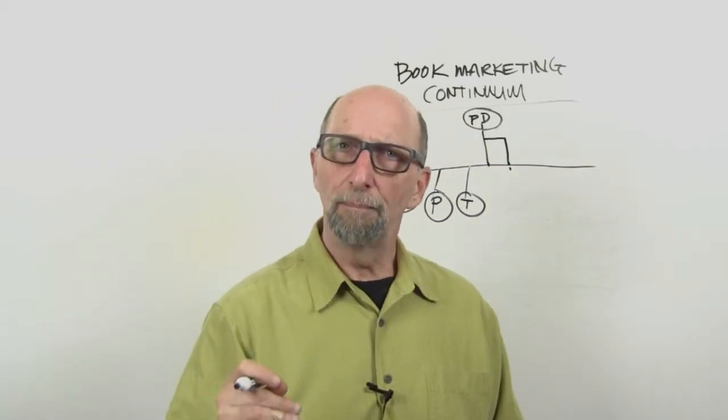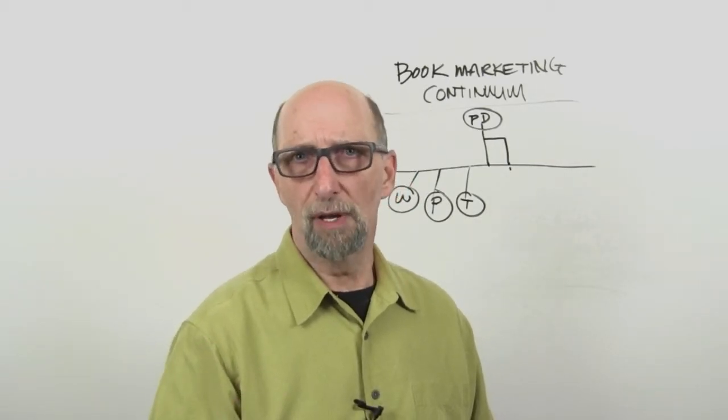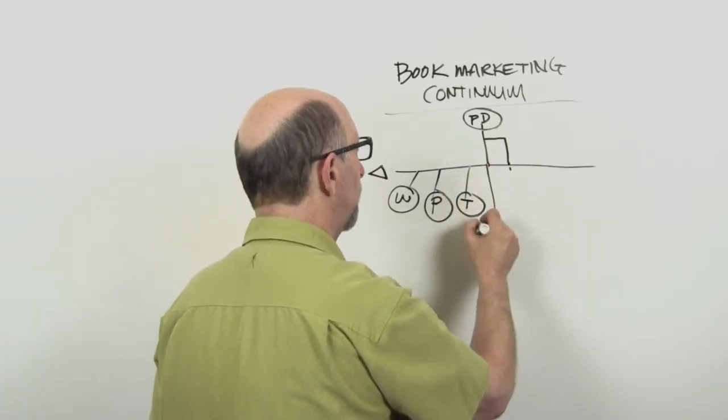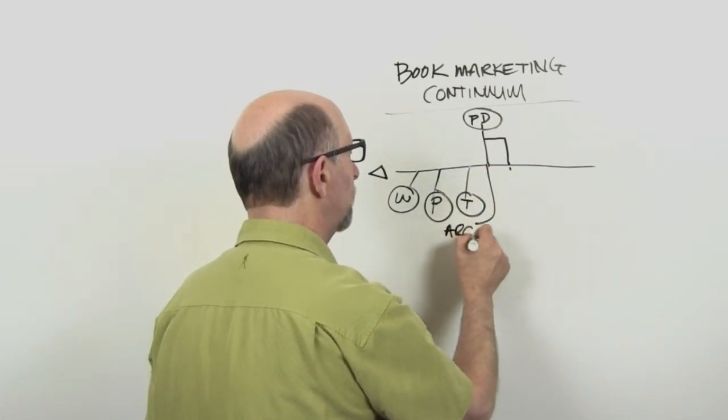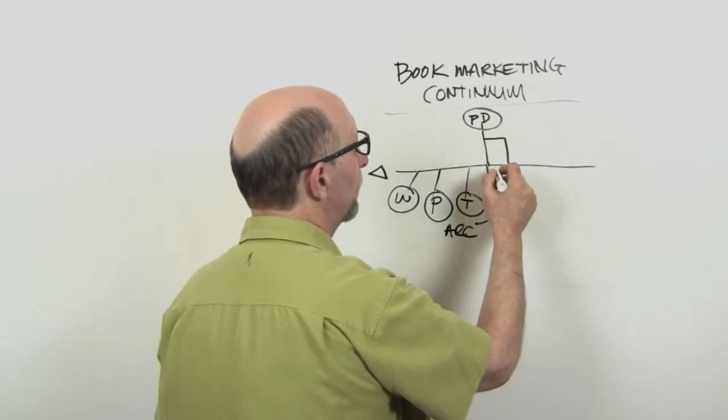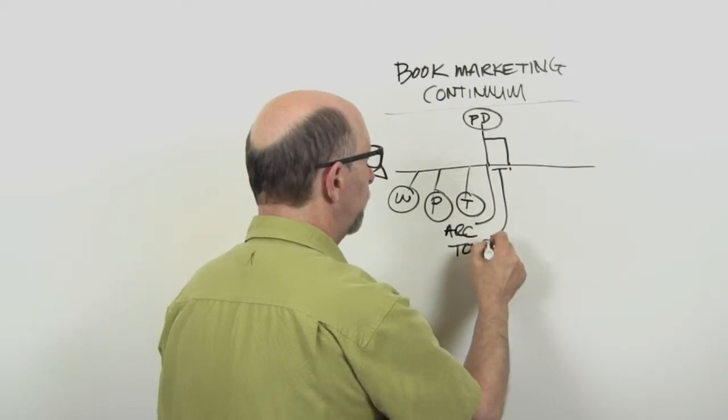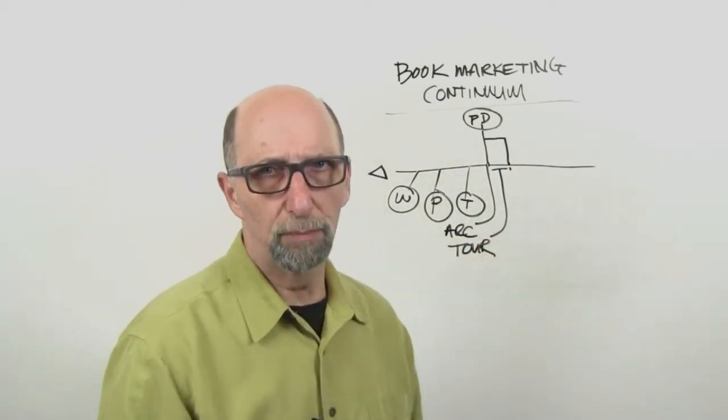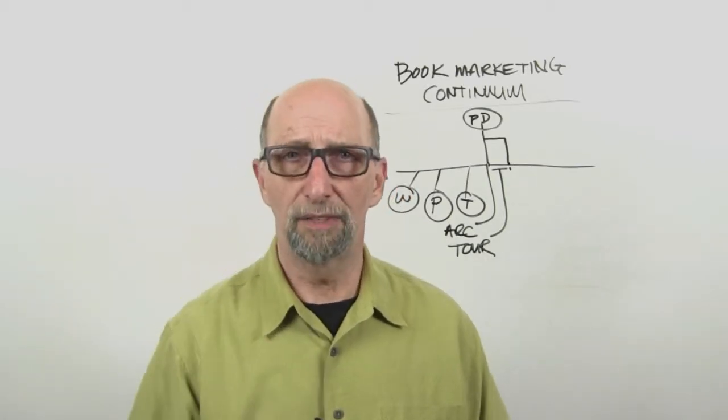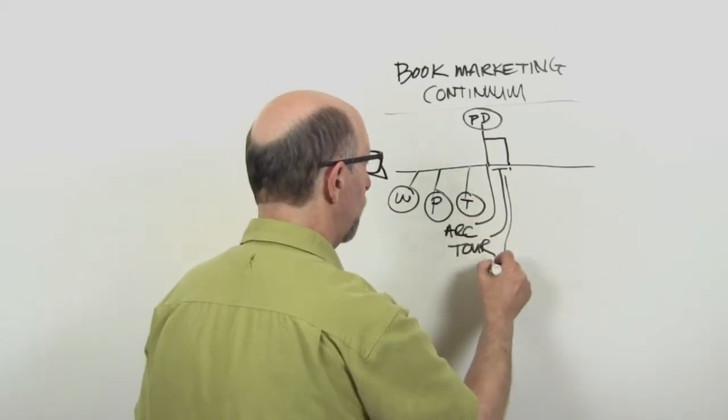But when you come up to your pub date, you've got a lot of marketing stuff that comes into play. For instance, right in here you're going to have advanced review copies going out and some of them are going to book reviewers. You might be setting up a blog tour and that's going to take place in this period here. Some people call that a virtual book tour because after all, it's a lot cheaper visiting somebody's blog than it is to fly to Cleveland and go to a bookstore.